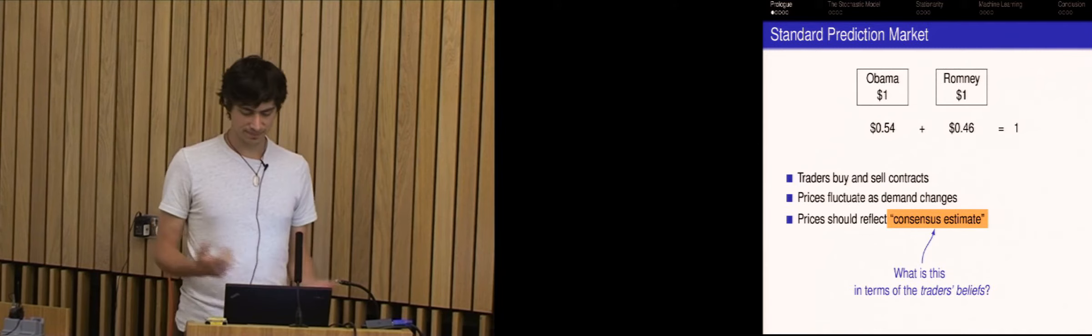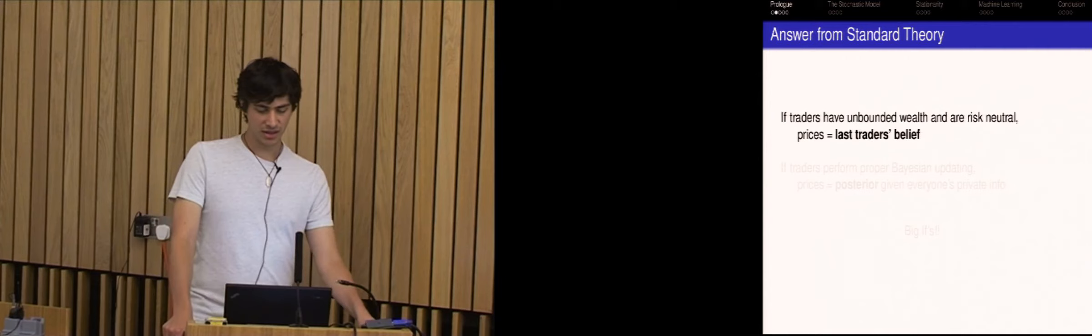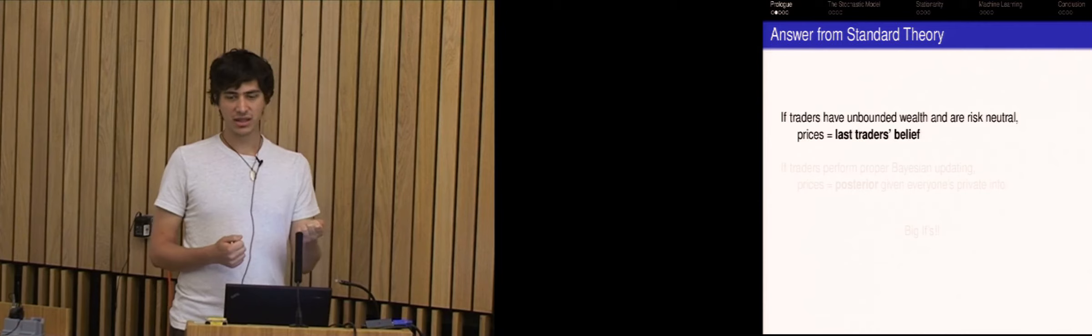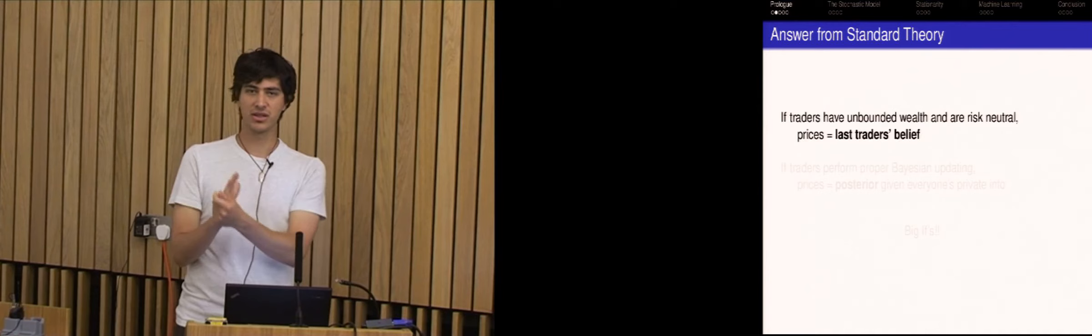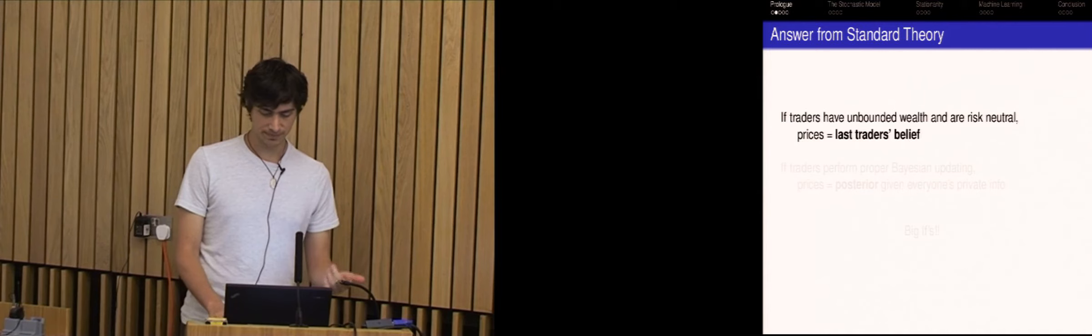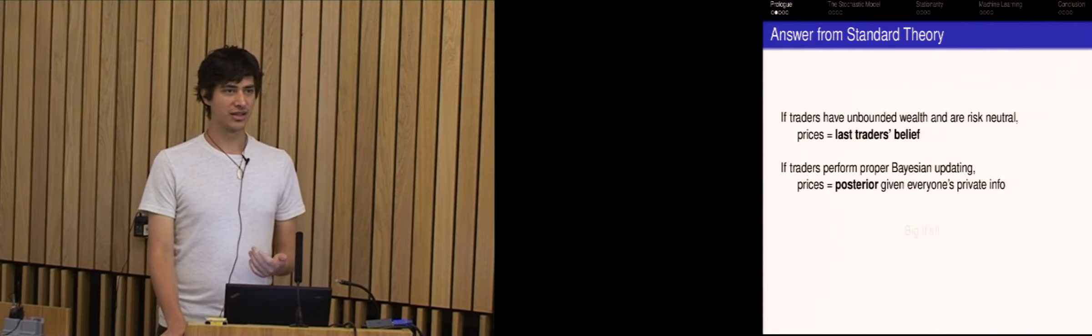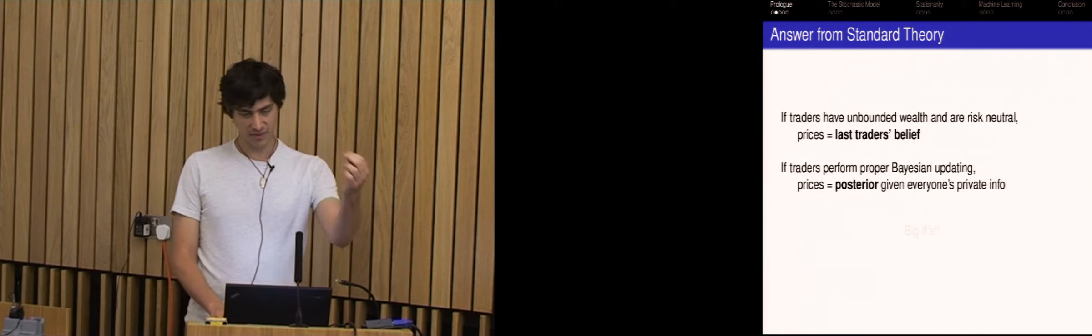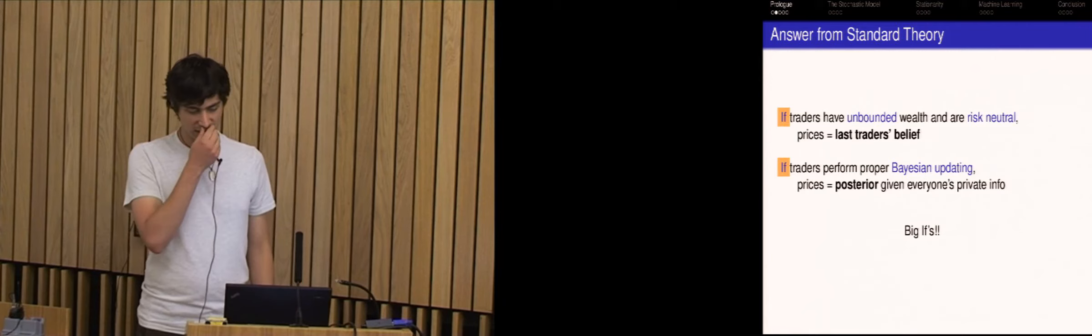And the prices should somehow, the theory says, reflect a consensus estimate of the population, of the underlying probability of which candidates should win. And the question that we're sort of going to explore is what is this consensus estimate, really? And in particular, can we express this in terms of the trader's beliefs? So if you look at the standard theory of prediction markets, it says well, if traders have unbounded wealth and are risk neutral, then the best thing to do is to buy in, buy or sell until the prices exactly match the probabilities that you have.